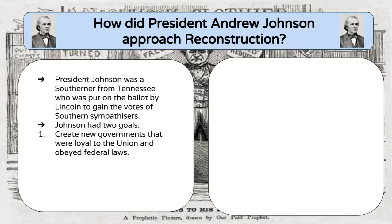The third requirement President Johnson set was that Southern states had to cancel their war debts — the federal government did not want them bringing that debt back into the United States. Fourth, they had to write a new state constitution. The constitutions they had before the war were considered invalid and needed to be rewritten to accommodate the new reality of reentering the United States.